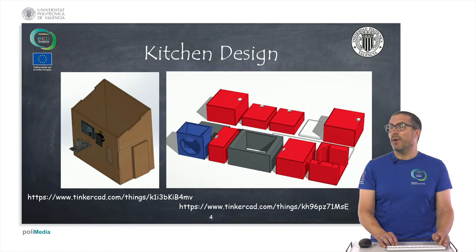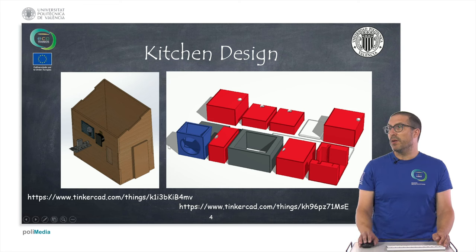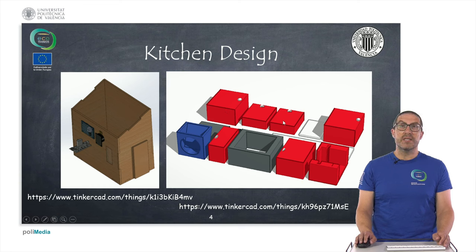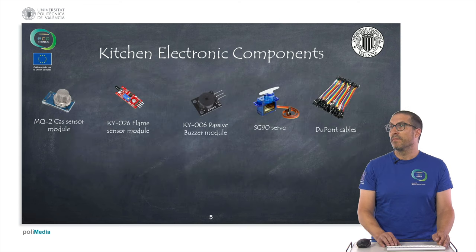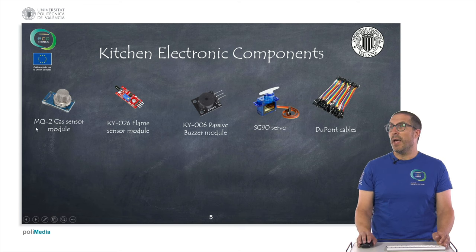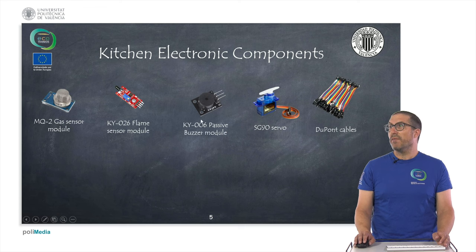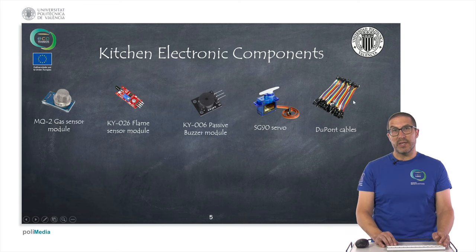This is the design of our kitchen. In these URLs you can find Tinkercad models of our kitchen and also printable parts that you can use to decorate the kitchen. These are the electronics that we use: we have an MQ2 gas sensor, a flame sensor which is the KY sensor 026, a passive buzzer module which is KY006, a standard SG90 servo, and some cables to connect the elements.